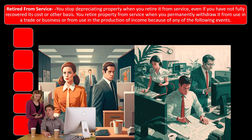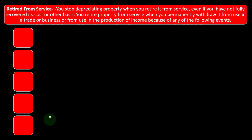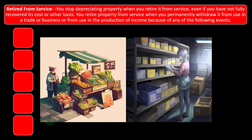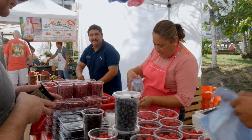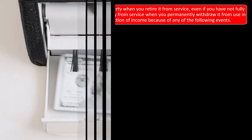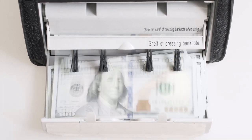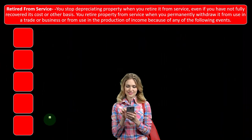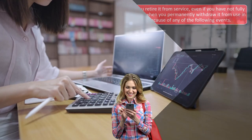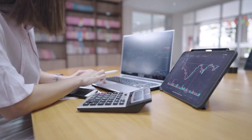You can stop depreciating property when you retire it from service, even if you have not fully recovered its cost or other basis. You retire property from service when you permanently withdraw it from use in a trade or business or from the production of income. If you just throw the piece of equipment away and you're not going to sell it, you might still get a benefit for the remaining adjusted basis that hadn't been depreciated yet — in the form of a loss on disposal. A disposal is calculated similarly to a sale, but with a sales price of zero: sales price zero, minus adjusted basis, equals a loss.